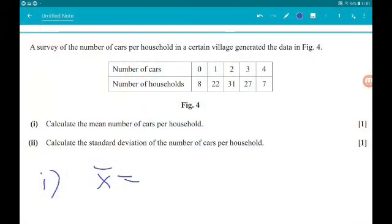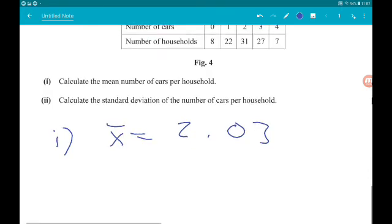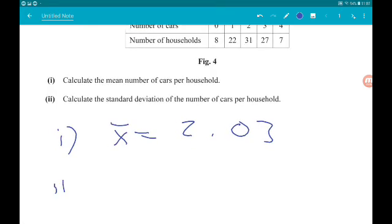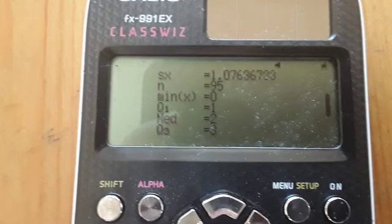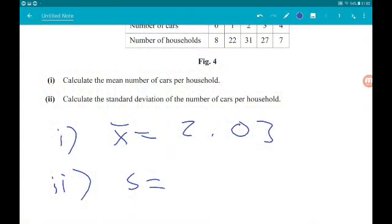So if we go to 2 decimal places, we've got 2.03. And then for part 2, standard deviation, we need to scroll down to the second screen to get S. 1.06. And again, to 2 decimals, we get 1.08. Boom.